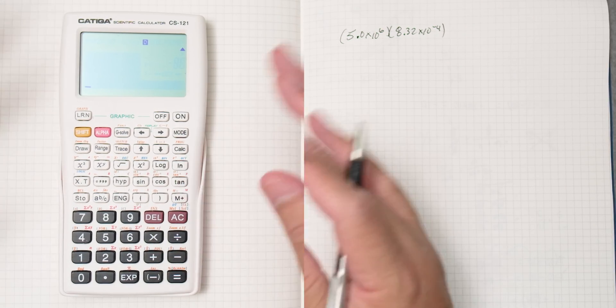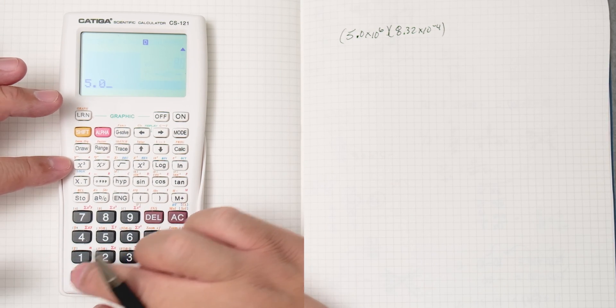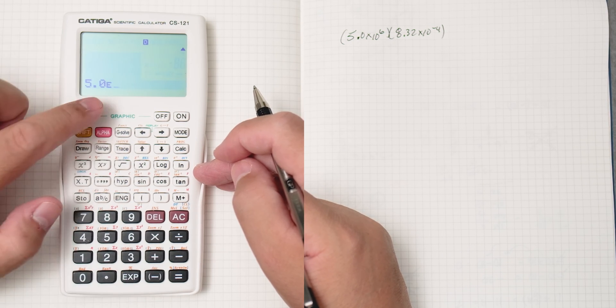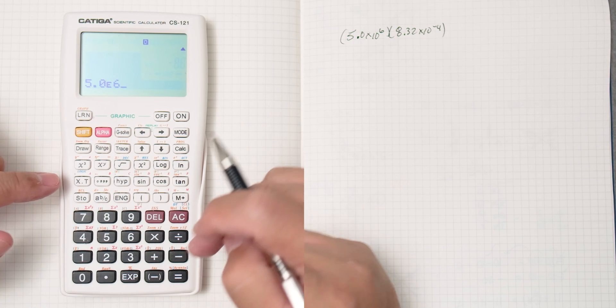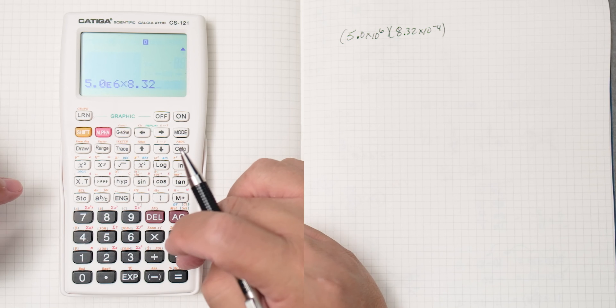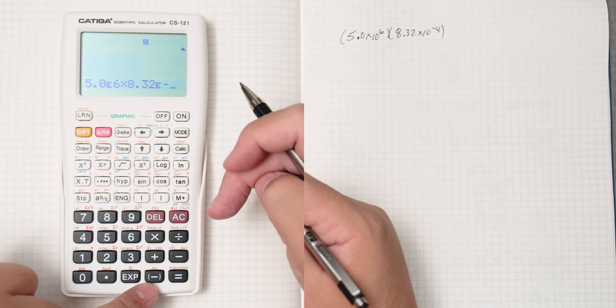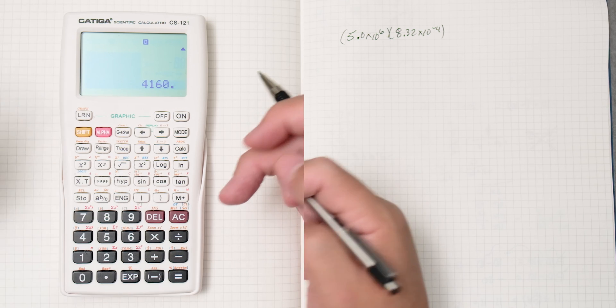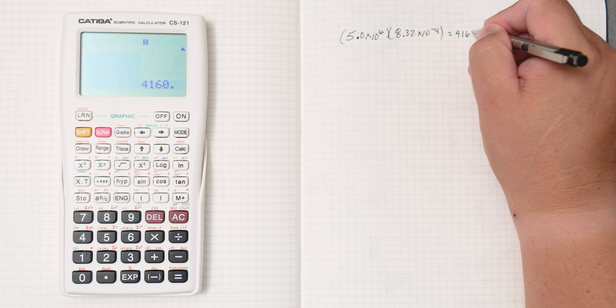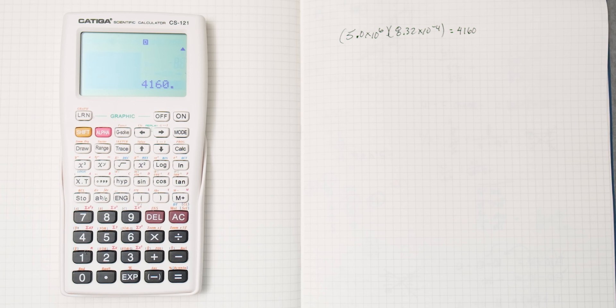We'll just do it without scientific notation mode first. 5.0 and then the times 10 is right here, which is an E, and then 6 times 8.32 and then times 10 to the minus, this negative, 4. Equals, and what we get here is 4,160, but how do we put that in scientific mode?